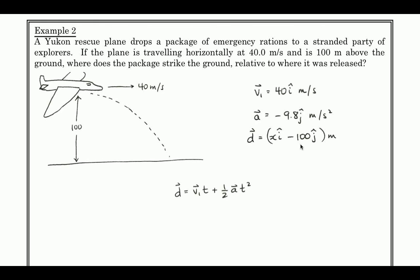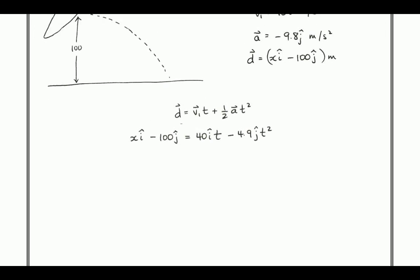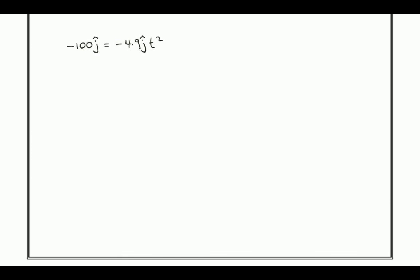So again, we turn to displacement is equal to v1 t plus 1/2 a t squared and we're going to separate out our components. So first we can write x i-hat minus 100 j-hat. That's our displacement vector. And that's equal to 40 i-hat t minus 4.9 j-hat t squared. And this is the point where we come to where we say, really, we can't do anything more with this because I've got i-hats and I've got j-hats, so I need to separate them out. We'll look first in the j-hat direction because this problem is complete. This part is complete and we can solve it. So we've got minus 100 j-hat equals minus 4.9 j-hat t squared. And if I divide 100 by 4.9 and then take the square root of it, I get a time of 4.5 seconds.